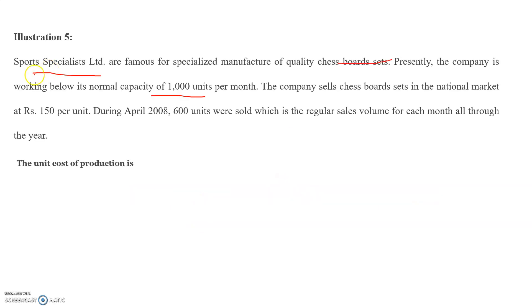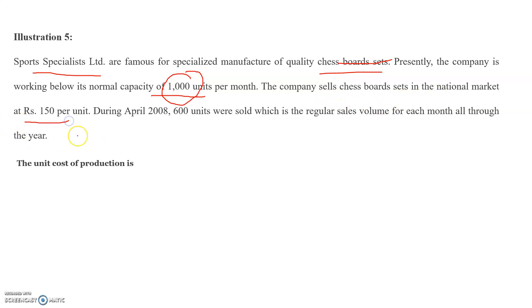Let us check the question first. Sports Specialist Limited are famous for the specialized manufacture of quality chessboard sets. At present, it is working below its normal capacity of 1000 units per month. The company sells chessboard sets in the national market at Rs. 150 per unit.